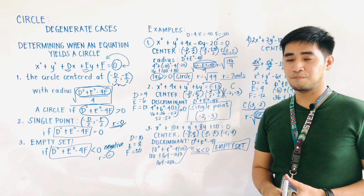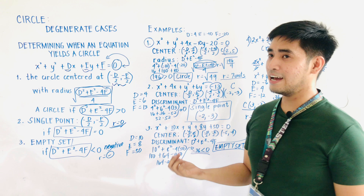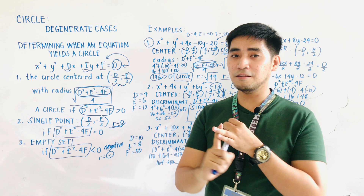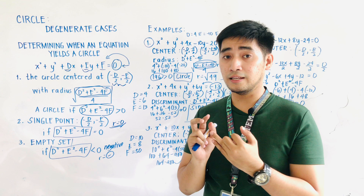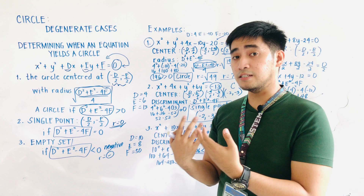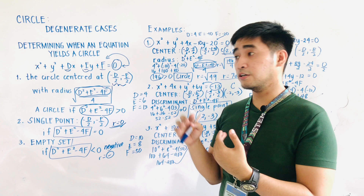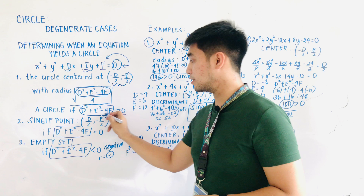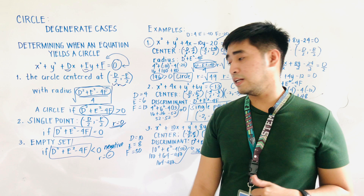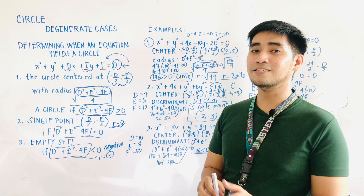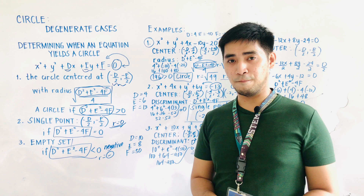That is how we determine when an equation yields a circle. The equation of the circle may yield a real circle, a single point, or an empty set. The degenerate cases are a single point and an empty set. Remember: the discriminant D squared plus E squared minus 4F greater than zero means a circle; equal to zero means a single point; less than zero means an empty set. I am Engineer Jod Edward Hernandez saying that mathematics is always fun. Goodbye and God bless.